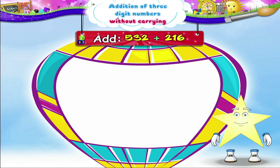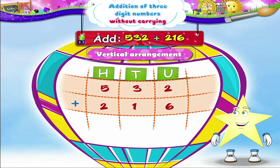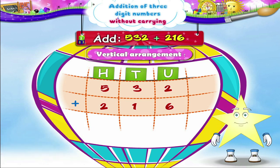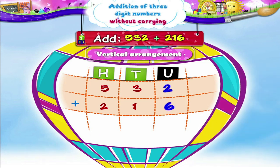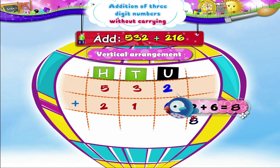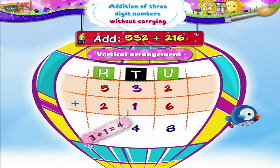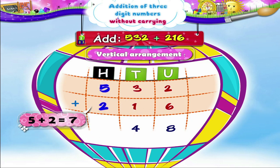The first step is to arrange the numbers vertically in proper columns as shown. Now, Starry, from which column should we start adding? Yes! Start adding the units place digits first. 2 units plus 6 units is equal to 8 units. Now add the tens place digits. Next, 5 hundreds plus 2 hundreds equals 7 hundreds.